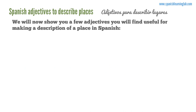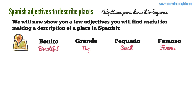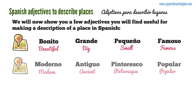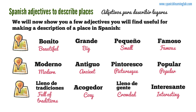Spanish adjectives to describe places. We will now show you a few adjectives you will find useful for making a description of a place in Spanish: bonito, grande, pequeño, famoso, moderno, antiguo, pintoresco, popular, lleno de tradiciones, acogedor, lleno de gente, interesante.